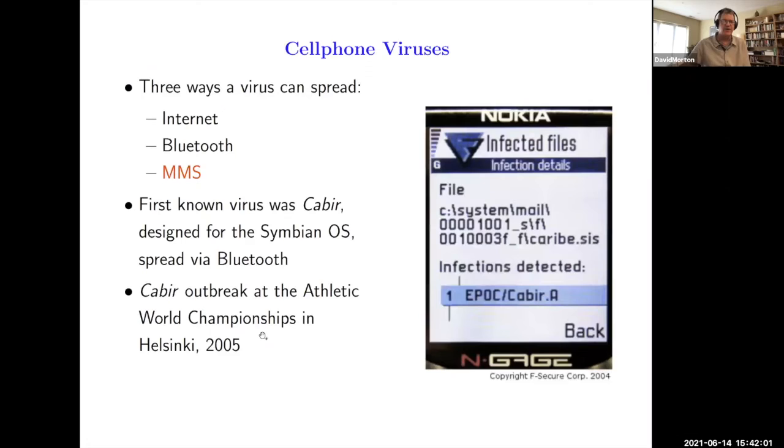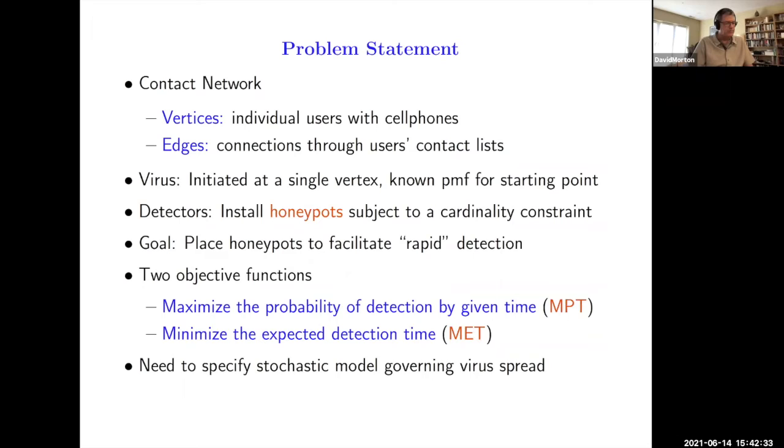Brand new example, we're going to try to detect cell phone viruses. The first cell phone virus was named Cabir, and it was designed for the Symbian Nokia operating system from way back. It spread through Bluetooth, and so Cabir, there was an outbreak at the World Athletic Championships in 2005, literally in the stadium. That was when one of the first cell phone viruses was produced, and the writers of that were good enough to put the source code on the web so that there were all sorts of people who grabbed that and built more viruses off of that.